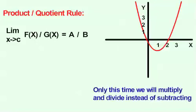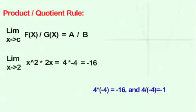Only this time, we will multiply and divide instead of subtracting. 4 times negative 4 equals negative 16, and 4 divided by negative 4 equals negative 1.